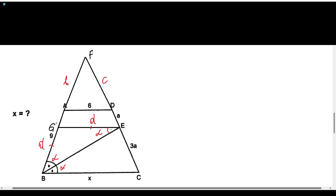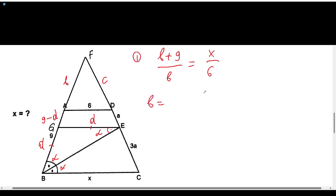Now we can use the similarities of two triangles for the big triangle and the small triangle af. The first equation is: (b + 9) over b, the big side over the small side, will be equal to x over 6. From this, we can find b in terms of x: b equals 54 over (x minus 6). Note that b cannot be 0.